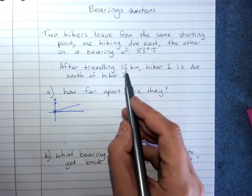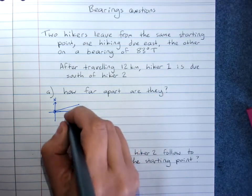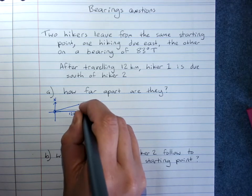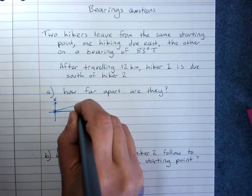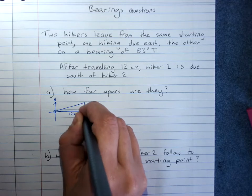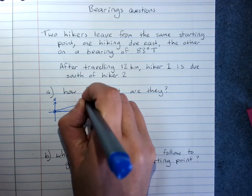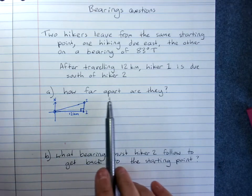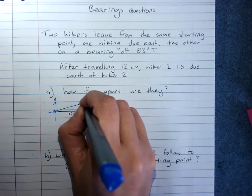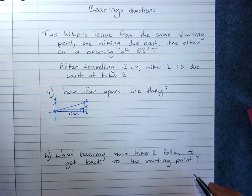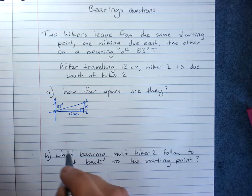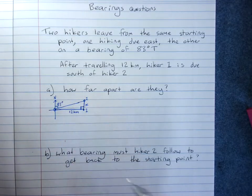After travelling 12 kilometres, hiker 1 is due south of hiker 2. So here is hiker 2, here is hiker 1. Question: how far apart are they? We'll be finding that distance x. We know we have a bearing of 83 degrees true. This will be 83 degrees.